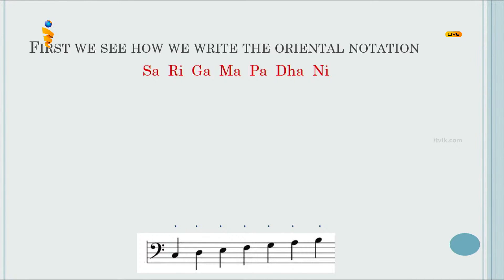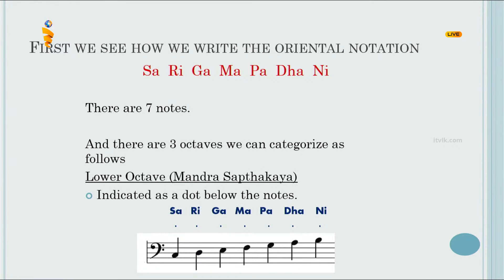There are three octaves in oriental music. The first one is the lower octave — in oriental notation, Mandra Saptakaya. It is indicated as a dot below the notes.